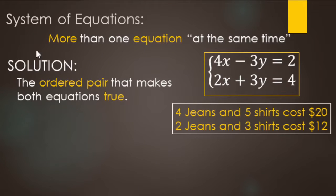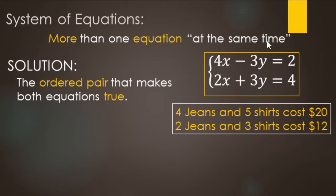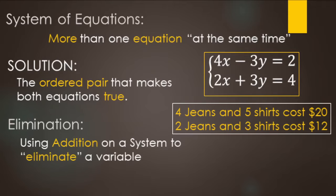We are going to be looking at systems of equations — that's when you have more than one equation and more than one variable. Our solutions, if we have two equations and two variables, are going to be ordered pairs that make both equations true. Here's an example from a word problem in standard form. Elimination is the preferred method, and that's where we use addition to eliminate a variable.